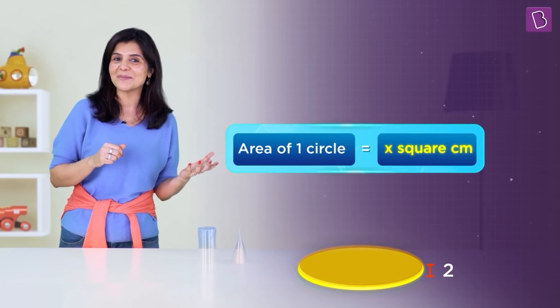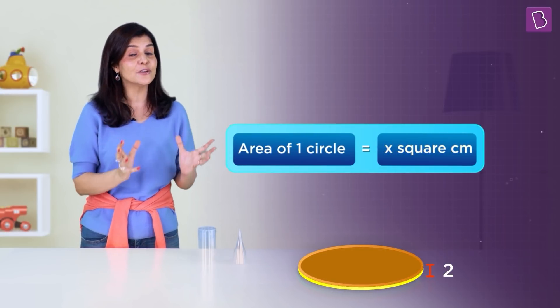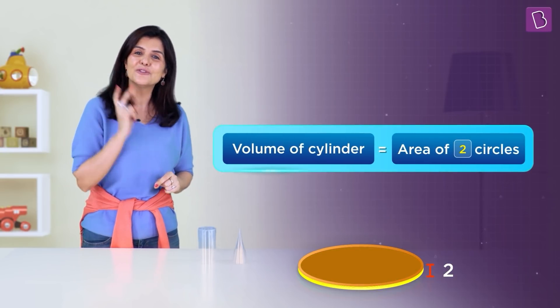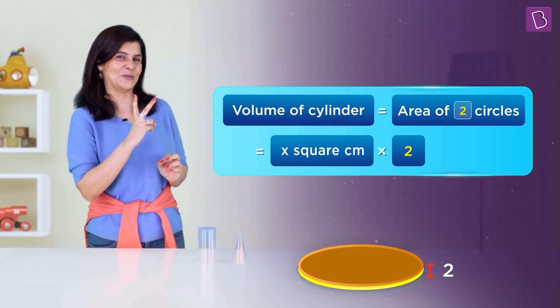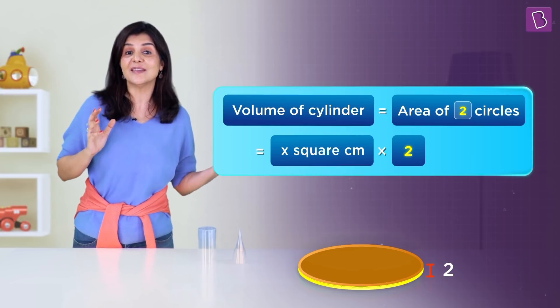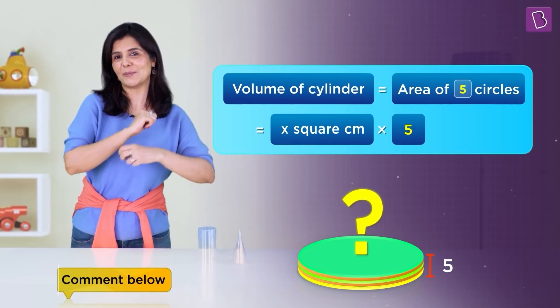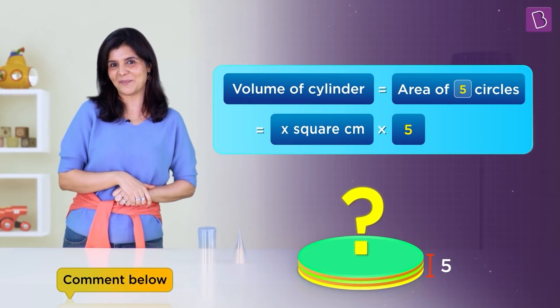Now, let's start stacking up circles. When we stack two circles on top of each other, we get a cylinder of height two units. One circle is x square centimeters. So, the amount of space inside the cylinder or the volume of the cylinder made up of two circles will become x square centimeters times two. Now, what if we stack five circles? What will be the volume of this cylinder then? Let's see, what will be the volume of the cylinder with height 10 units and 50 units?